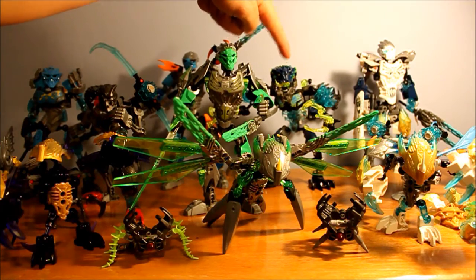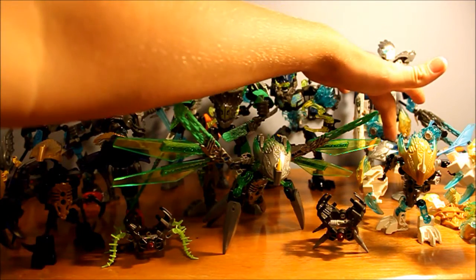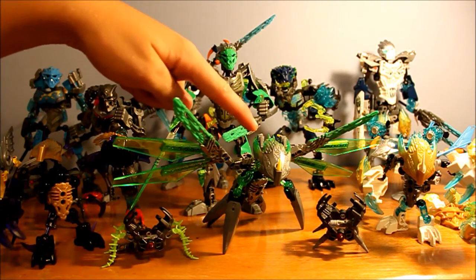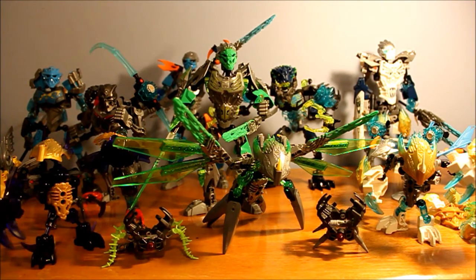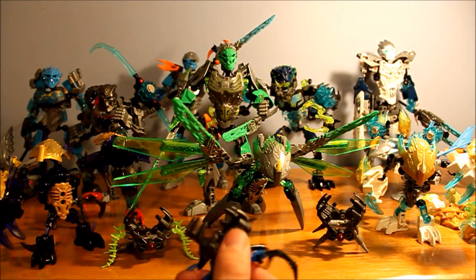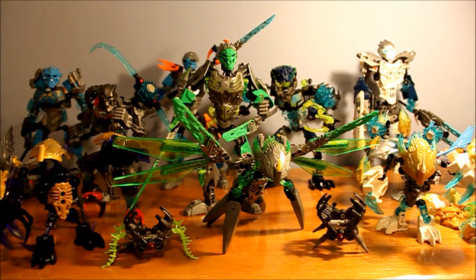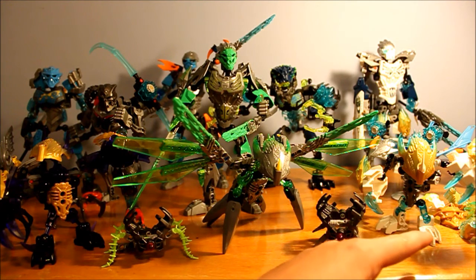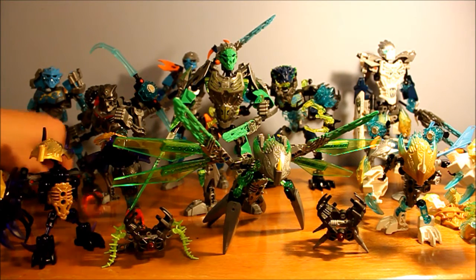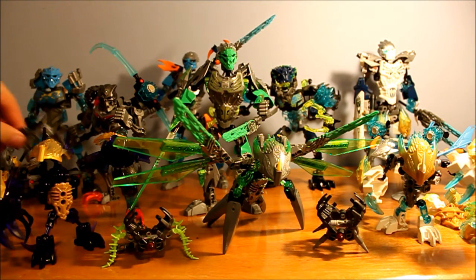Here's Storm Beast. Akaida is right here. And Melum is right there. Uxar is right here. Terak's here. The three shadow traps are right here. The water one's just off screen. All the collectible masks are just off camera, just to your right. And the Skull Spider is right here, tucked behind Terak.